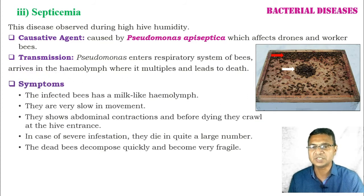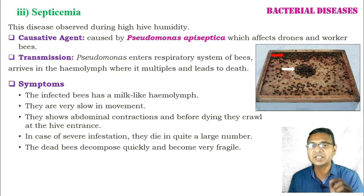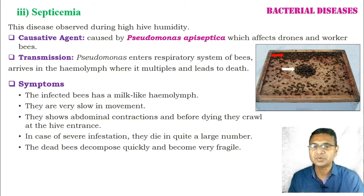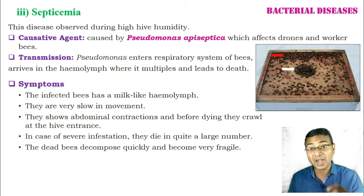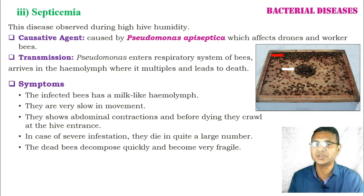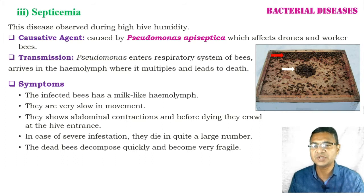The symptoms of septicemia: infected bees have a milk-like hemolymph, whereas normal hemolymph is a tinge greenish in color. Infected bees are very slow in movement, show abdominal contraction, and before dying they crawl at the hive entrance. In cases of severe infestation, they die in quite large numbers as observed in the image. The dead bees decompose very quickly and become very fragile.